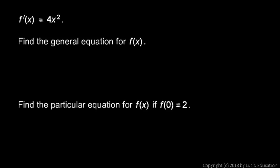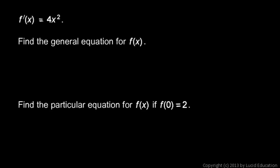In this example, we are told that f prime of x is 4x squared. That's the derivative of f. And we're told to find the general equation for f — the equation that has 4x squared as its derivative.